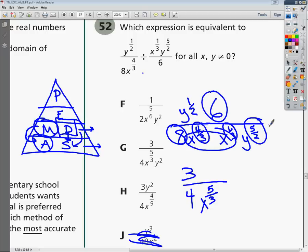Now, to do my subtraction, I do 5 halves minus 1 half, or 5 minus 1 is 4. 4 over 2 is 2. So that's going to bring down y to the second power. And since my circle is on the bottom, so goes my variable on the bottom. So I'm looking for 3 over 4 times x to the 5 thirds times y to the second power, which is, of course, G.